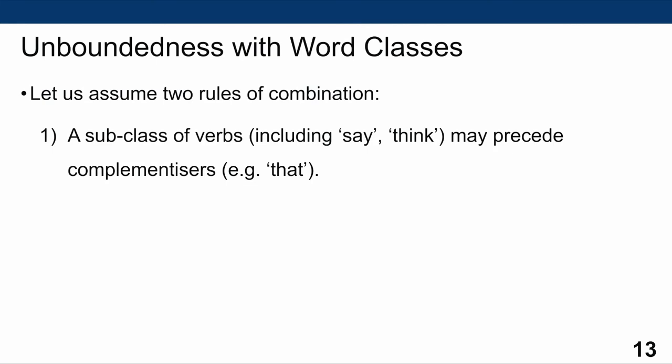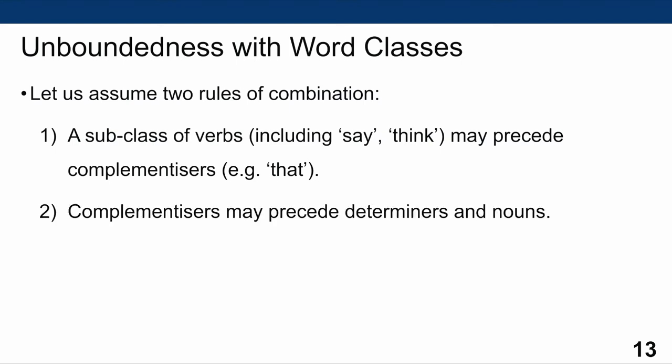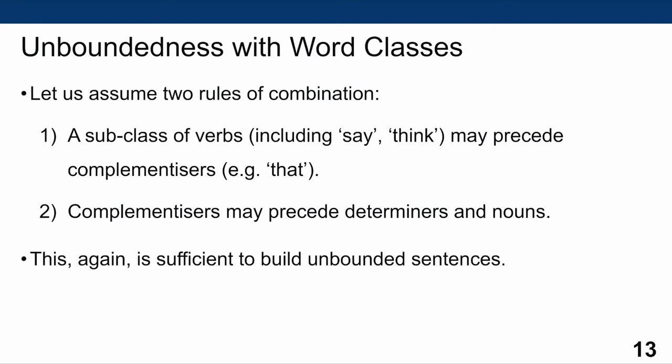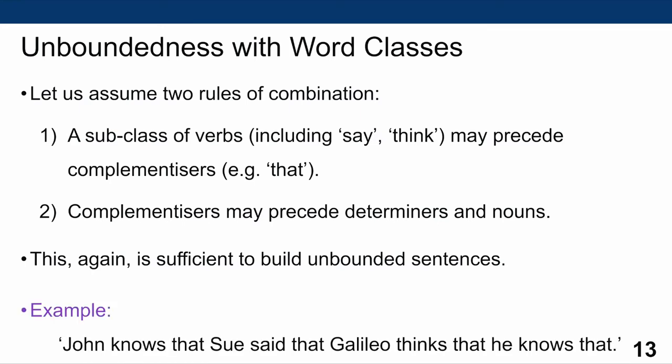Constraints can now also be formed by referring to word class rather than individual words. We might say that intransitive verbs may not precede nouns. For building unbounded clauses, we'll need two rules: first, a subclass of verbs — including 'say,' 'think,' and so on — may precede complementizers such as 'that'; second, complementizers may precede determiners and nouns. With these two rules, we can build unbounded sentences such as 'John knows that Sue said that Galileo thinks that he knows that,' integrating many more variations by using word classes.